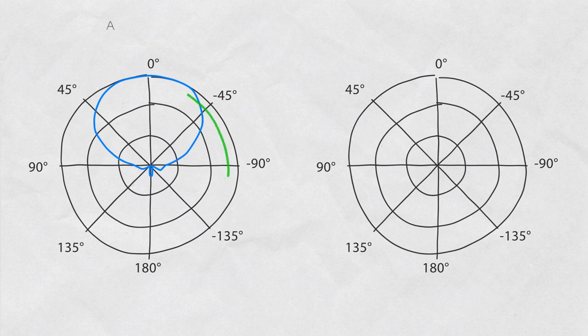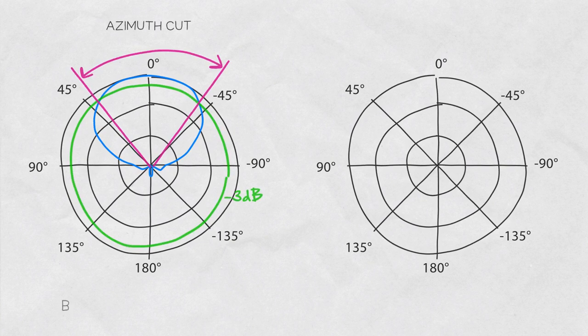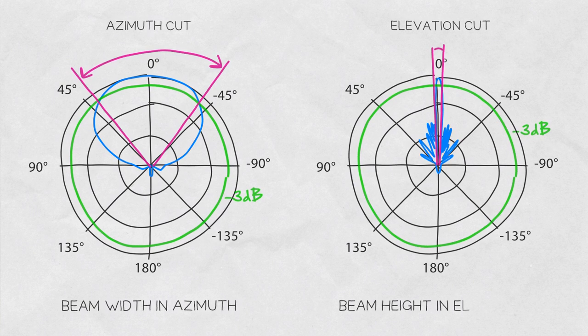If you perform a measurement on the azimuth cut, you measure how wide the beam is in the azimuth plane. On the elevation cut, you measure the beam width in the elevation plane, or you may say you're measuring how tall the beam is.